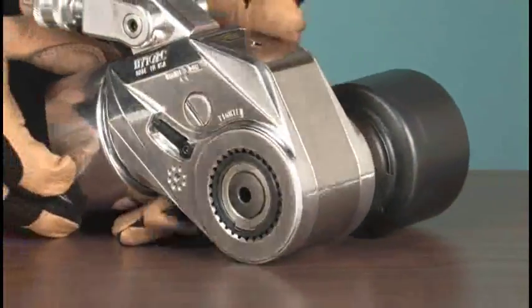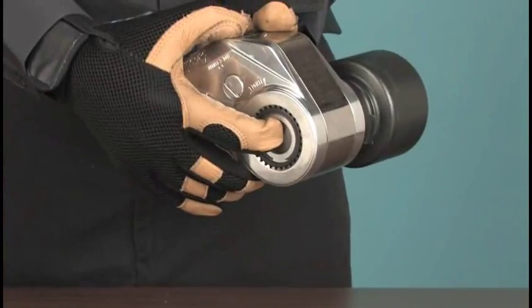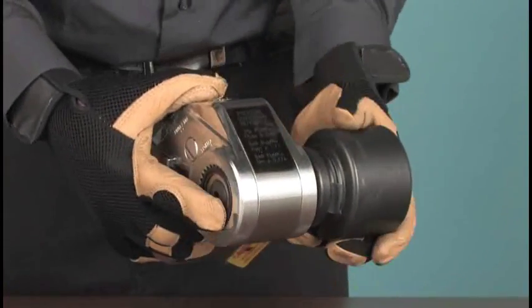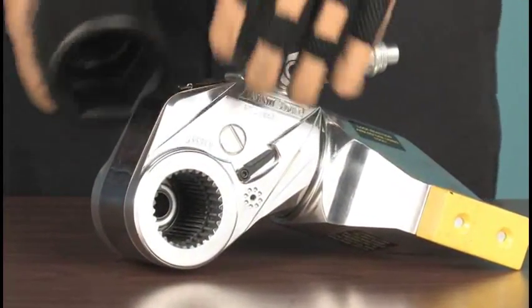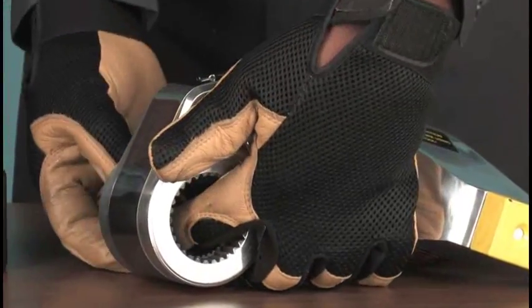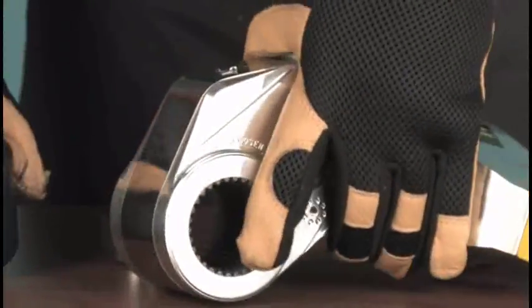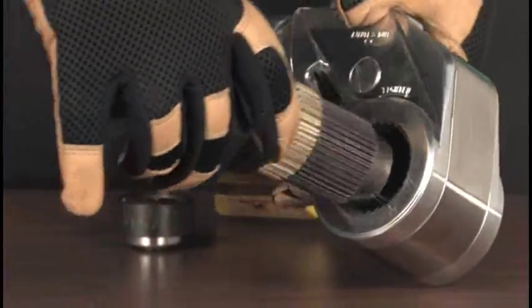If we want to loosen a nut, depress the drive retainer button and remove the drive from the wrench. Place it in the opposite side, making sure to align the splines and secure it with the retainer.